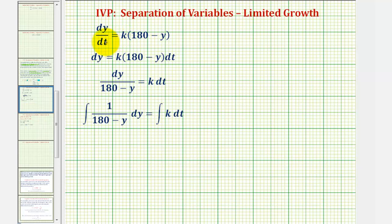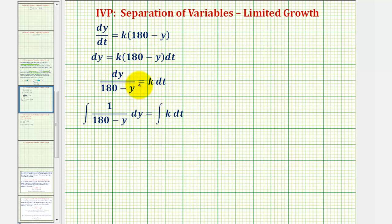We'll begin by solving this differential equation using separation of variables. For the first step, we'll multiply both sides of the equation by dt, which gives us this equation. Now because we have dy on the left, we want the expression 180 minus y also on the left. So if we divide both sides of the equation by this expression, it would give us this equation. And now we can integrate both sides.